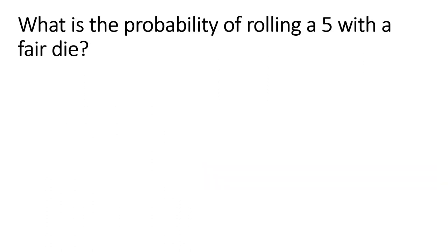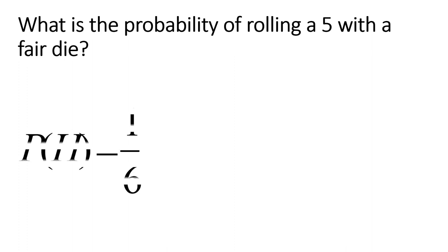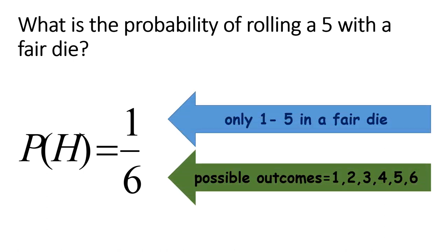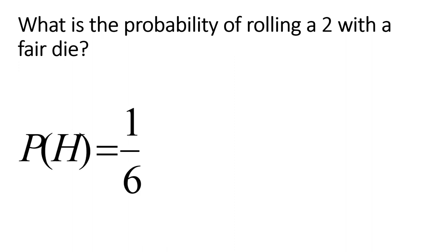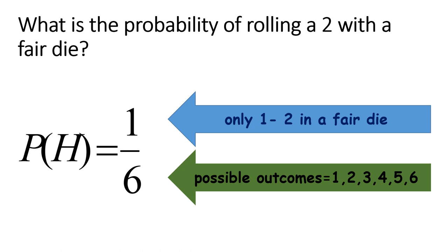What is the probability of rolling a 5 with a fair die? A fair die refers to a 6-sided die. Since there is only one face showing 5, and the possible outcomes are 1 through 6, the answer is 1 over 6. What is the probability of rolling a 2 with a fair die? There is only one 2 on a 6-sided die, so the answer is also 1 over 6.